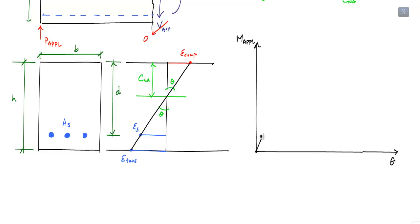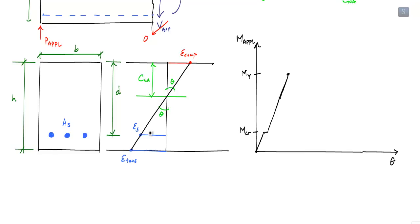Initially, all materials are linear elastic. Then the concrete cracks in tension, because concrete is weak in tension — causing a discontinuity or step in the moment-curvature diagram. The moment at that event is called the cracking moment, M_CR. Continuing to increase loading, the beam stays linear elastic until the steel yields. The moment at that point is the yield moment, where the strain in the steel has reached its yield value.